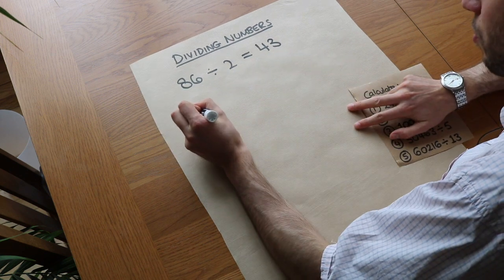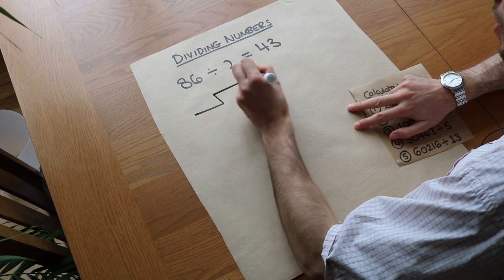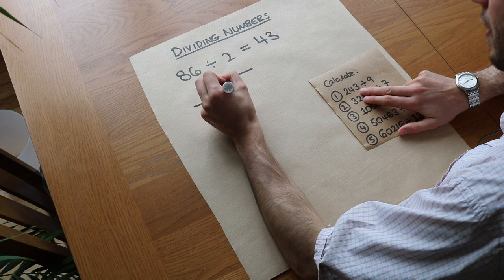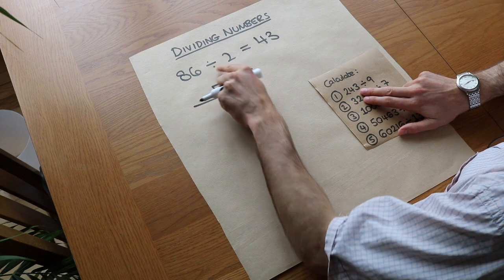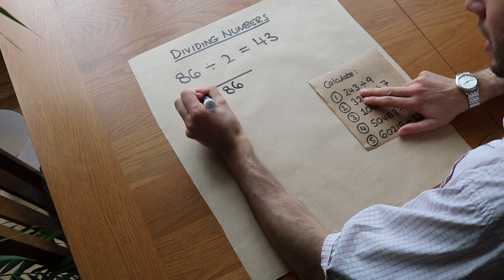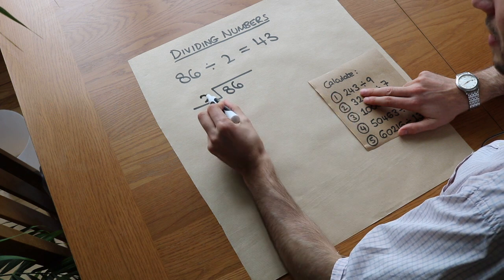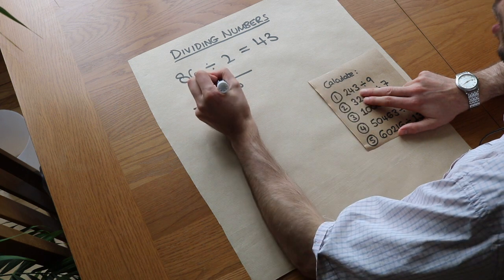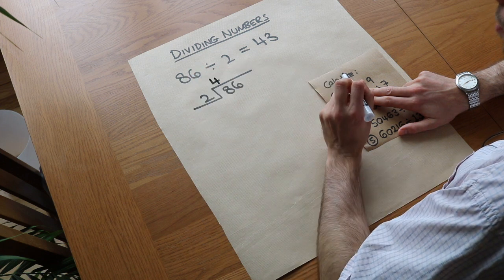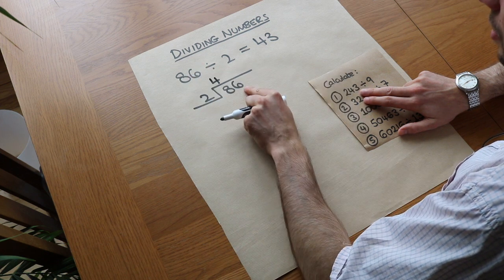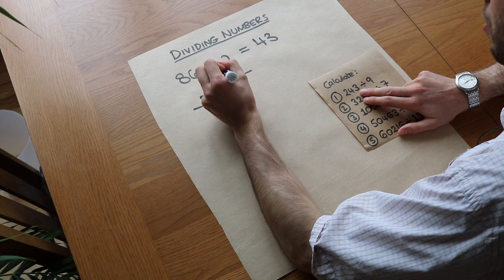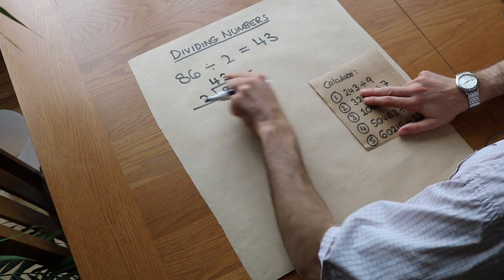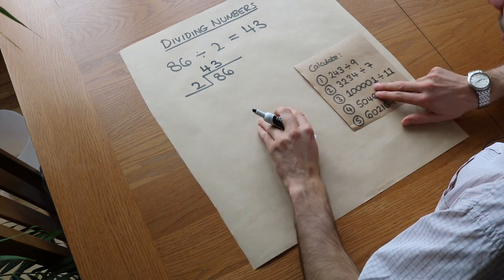But we could do something called the bus stop method, also known as short division. We put the first number — the 86 — on the right, and the number we're dividing by on the left. Then we say: how many times does 2 go into 8? It goes in 4 whole times, so we put a 4 there. And how many times does 2 go into 6? It goes in 3 whole times — 2 times 3 is 6 — so we put 3 there. And we can see we get 43 as the answer.